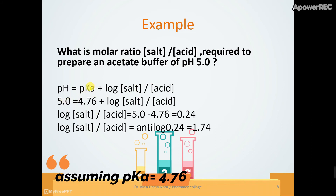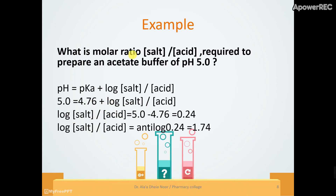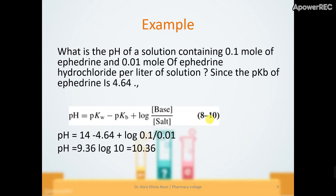Assuming pKa equals 4.76, we apply the buffer equation for the weak acid. To find the ratio of salt over acid, we take the antilog and the result gives a ratio of 1.74.